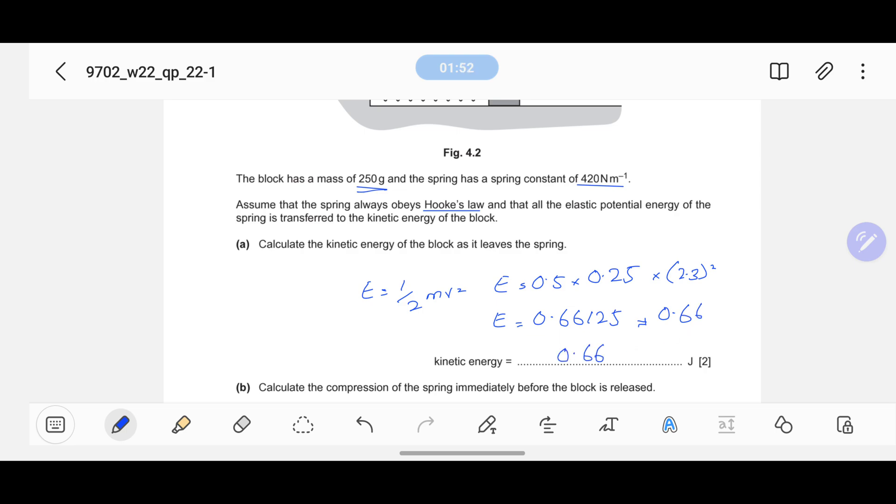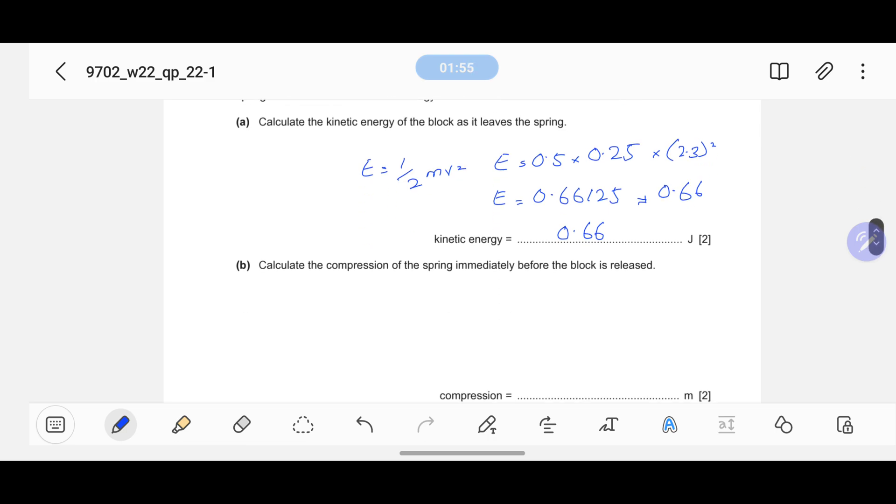Now in part B, it's asking calculate the compression of the spring immediately before the block is released. By compression, he means we need to find the value of x naught. The formula is energy equals half k x squared. If I manipulate this formula and put x as the subject, I get the equation 2E over k whole square root equals x.